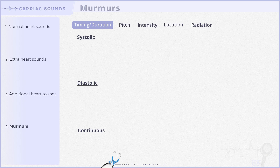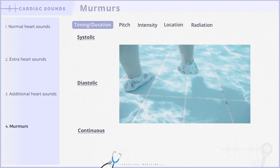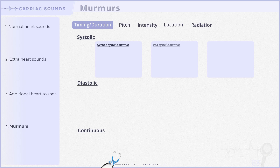After broadly classifying murmurs into these three categories, we can subclassify them based on where they occur during the cardiac cycle and how long they last. Focusing on systolic murmurs, these can be further divided into three types: ejection systolic, pan-systolic, and late systolic murmurs. Ejection systolic murmurs start at the beginning of systole and peak in mid-systole. They gradually rise and then decrease in intensity, and are therefore also called crescendo-decrescendo murmurs. This type is typically associated with aortic stenosis.